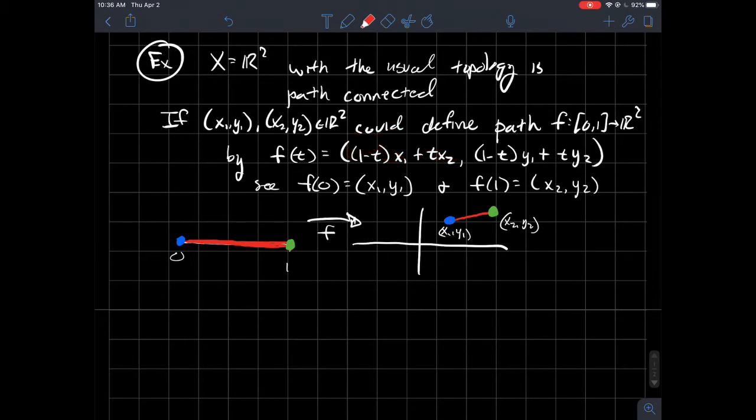And then the second coordinate, when t equals 1, y1's gone because of that, and you're just left with y2. So in other words, f(1) is (x2, y2).